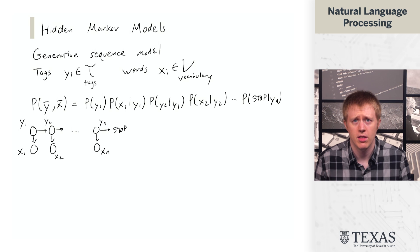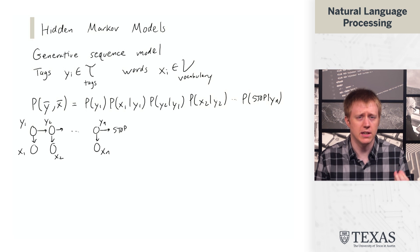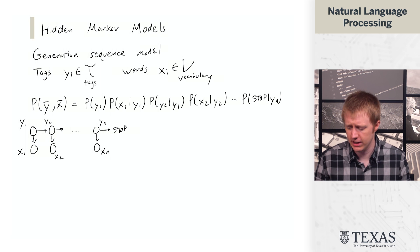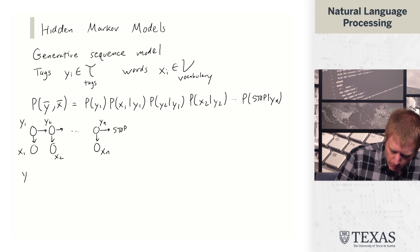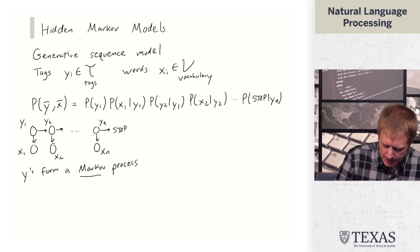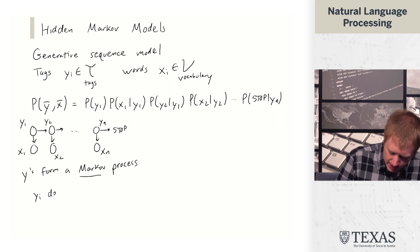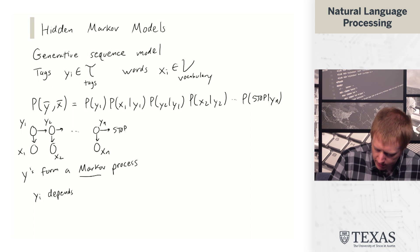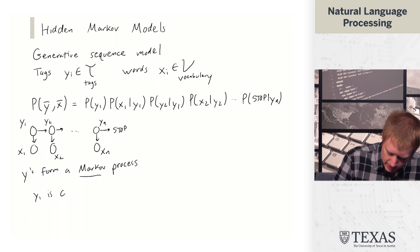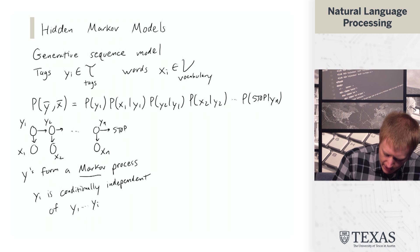So this is a model that makes certain independence assumptions. And essentially, the reason it's called a hidden Markov model is because the y's form a Markov process, meaning yi is conditionally independent of y1 through yi minus 2, given yi minus 1.